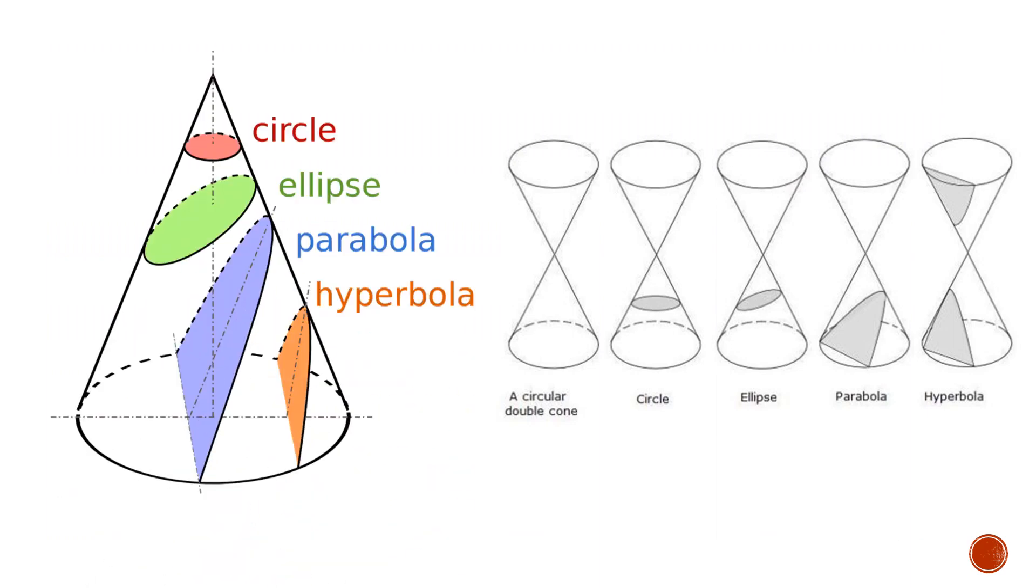Circles, ellipses, parabolas, and hyperbolas are conic sections and can be modeled on a cone. All of these four figures are basically intersections of a plane at different angles of a circular cone.